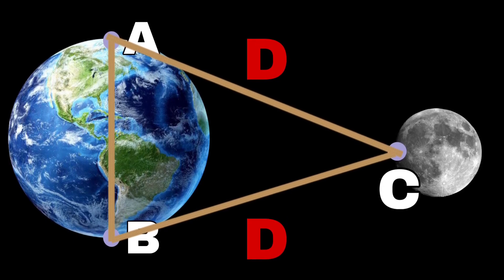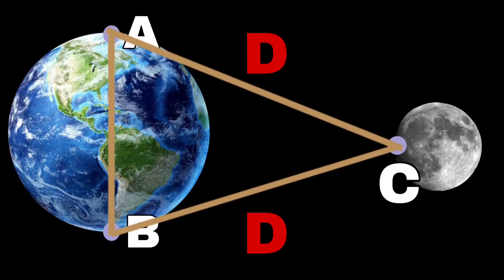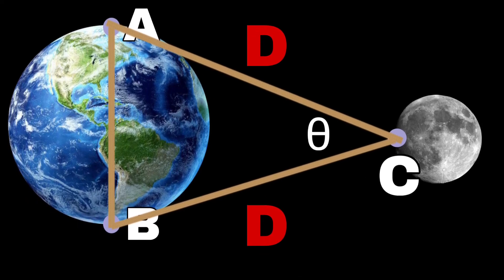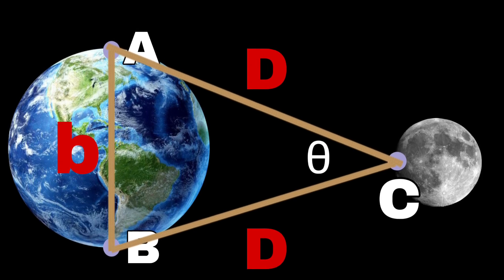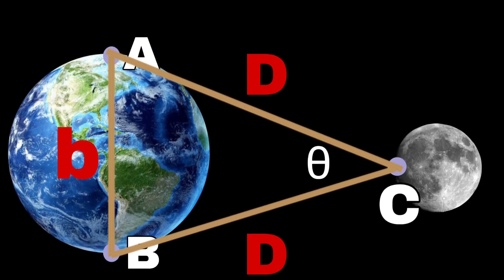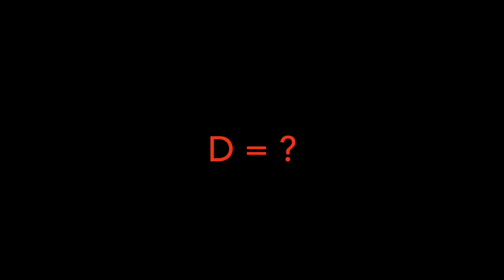Now, you can see that points A and B had formed an angle on point C. Let this angle be theta and distance between points A and B is B. Now the triangle is completed. In order to calculate distance between Earth and Moon, we have to find the value of D.